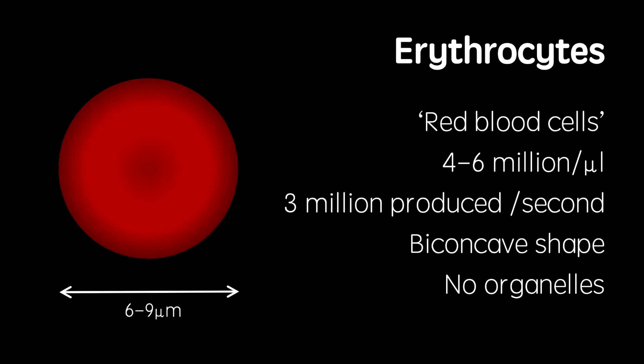These cells have a biconcave shape to allow for a high surface area to volume ratio to maximize oxygen absorption. They also contain no nucleus or other organelles to leave room for maximal hemoglobin.